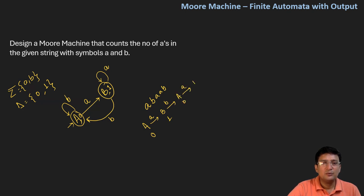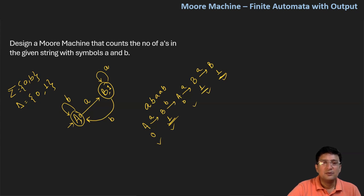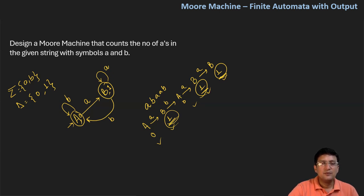If I get another A, I will move to state number B and one is the output. If I get another A, I will remain at state number B and one will be the output. So there are three ones which have come in this Moore machine when I process the string. That is what we expected — whenever A's come, the counting is implemented by one.